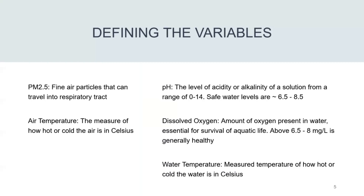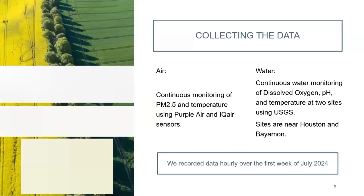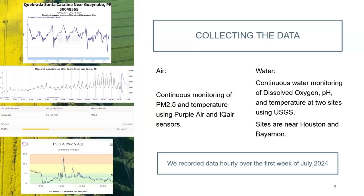Our defining variables for this project were PM2.5, air temperature, pH, dissolved oxygen, and water temperature. To collect the air data, we used continuous monitoring of PM2.5 and air temperature using PurpleAir and IQ air sensors.